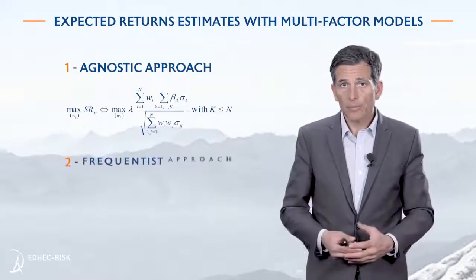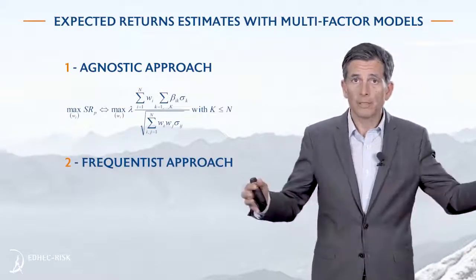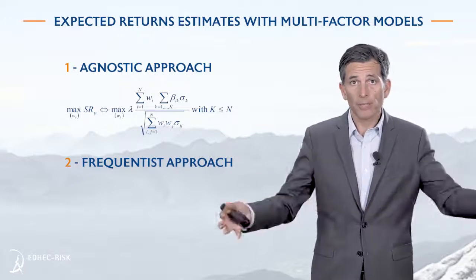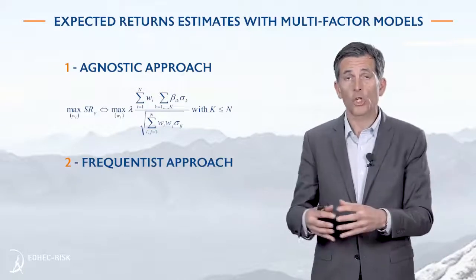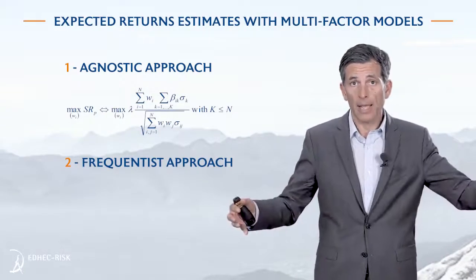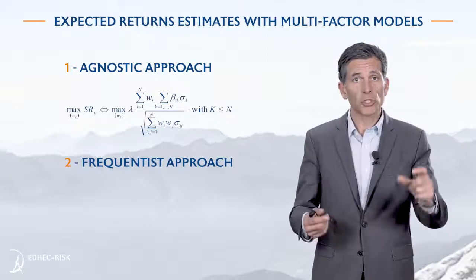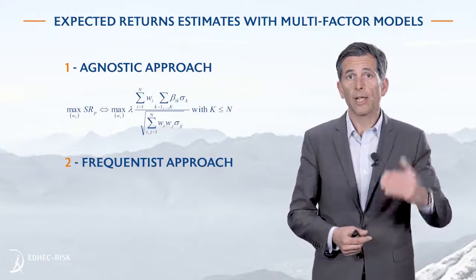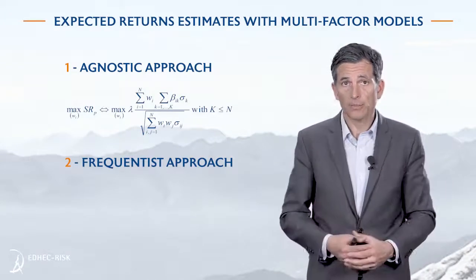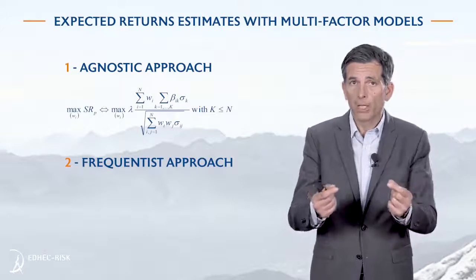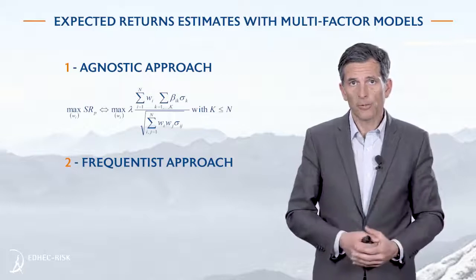The alternative is to look at the data — specifically a long sample, the longest possible — and examine the Sharpe ratio for all factors over that long sample. By doing this, you may conclude that some factors have a higher reward per unit of risk compared to others, and you may want to use that information to optimize your portfolio.